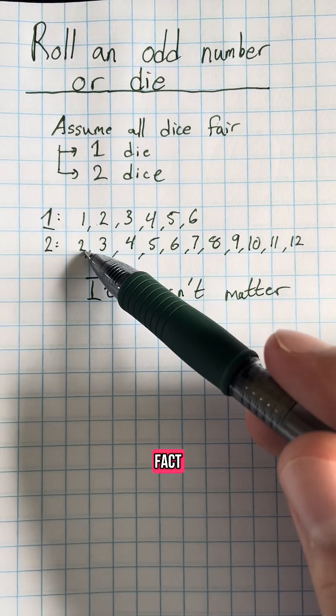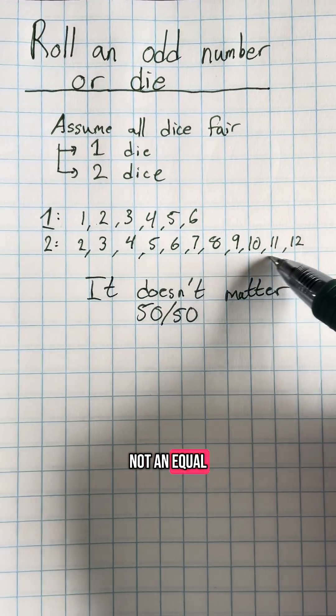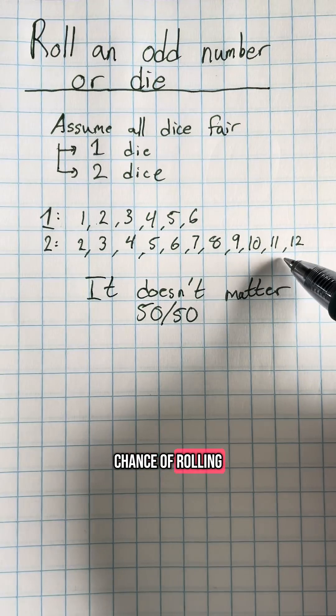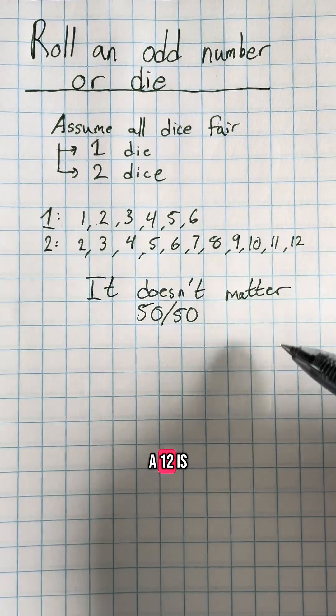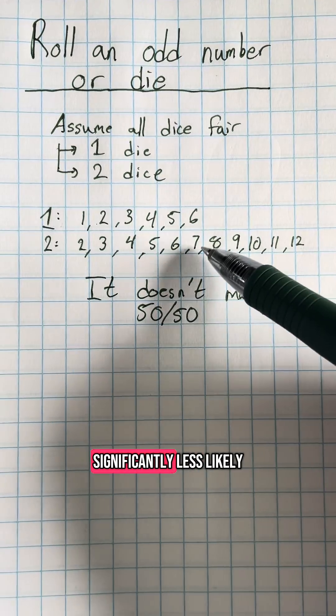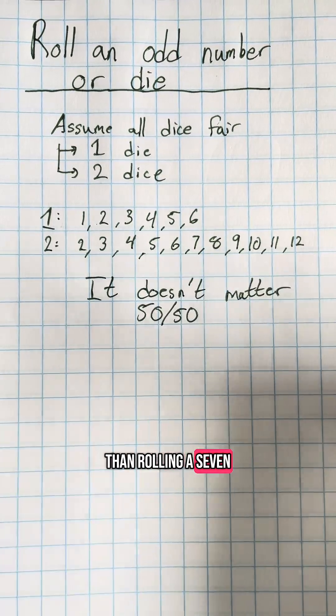Notice that there's actually not an equal chance of rolling any of these numbers. In fact, rolling a 2 or a 12 is significantly less likely than rolling a 7.